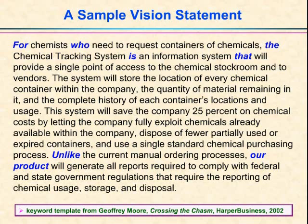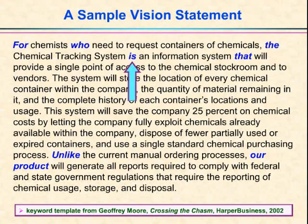First we identify who this product is intended for — for chemists who have a particular need, in this case the need to request containers of chemicals. Then we name the system we're talking about: the Chemical Tracking System. It's an information system that will provide a single point of access to the chemical stockroom, where we store thousands of bottles of chemicals, and also to vendors from whom we place orders for chemicals.